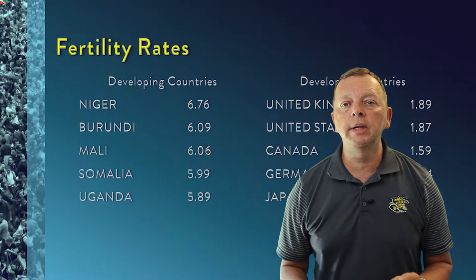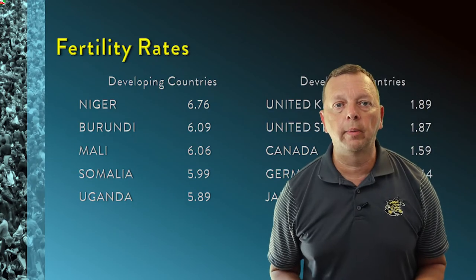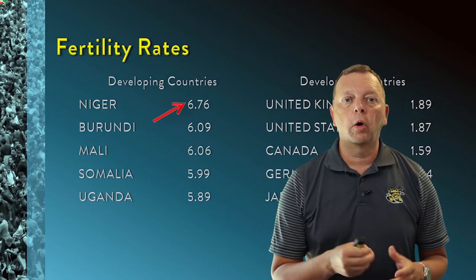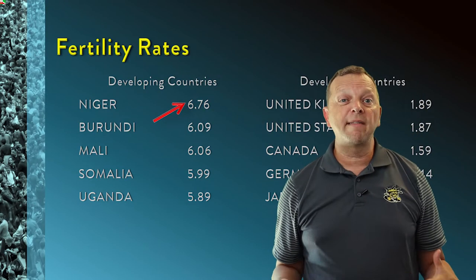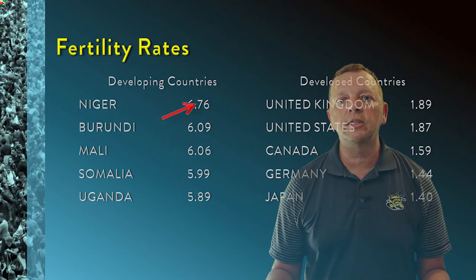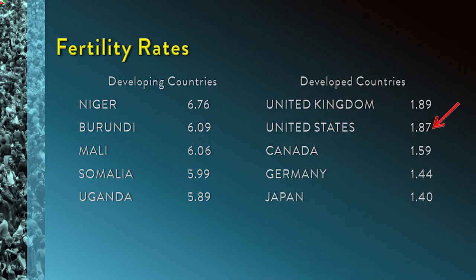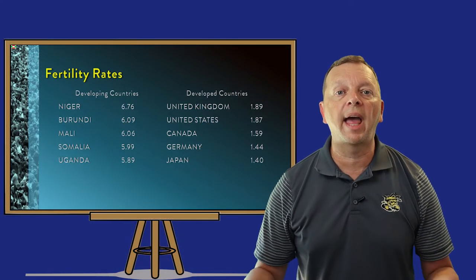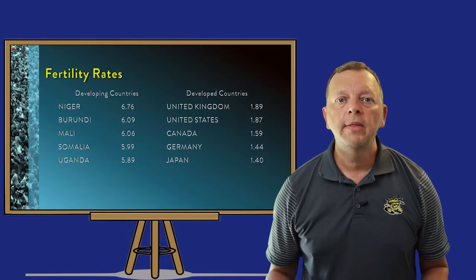We see the same thing in fertility rates. In Niger, every woman on average is going to have almost seven kids, while in the United States the average woman will only have 1.87. Remember, this is just an average. Now, if we have to track the number of babies, that also means demography will have to track the number of people that die, and we do this through two numbers as well.